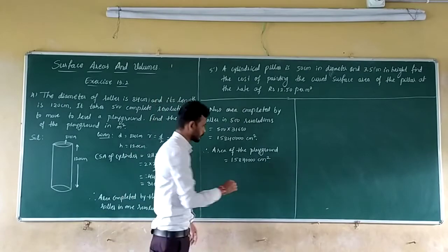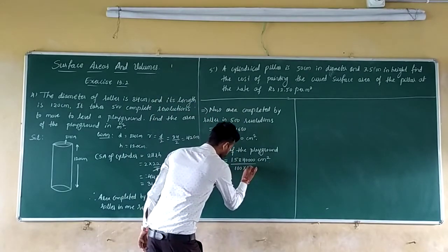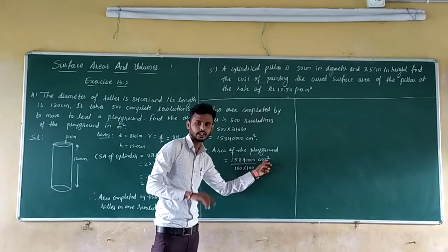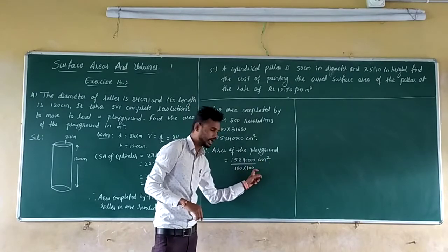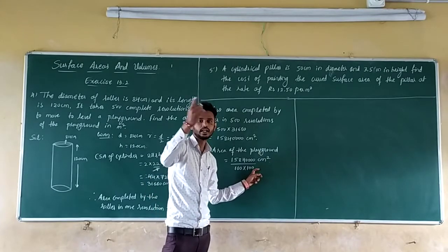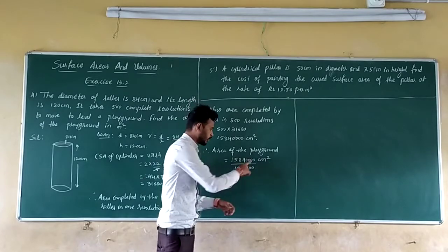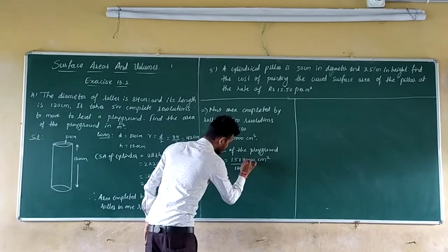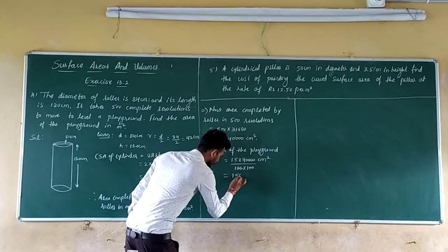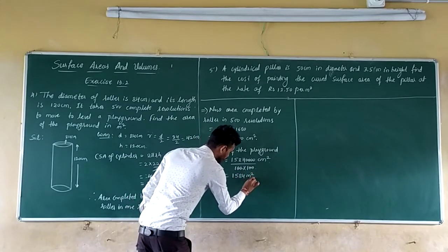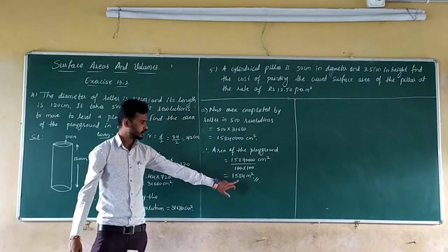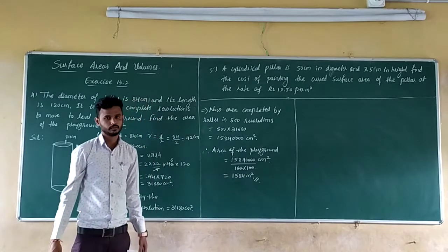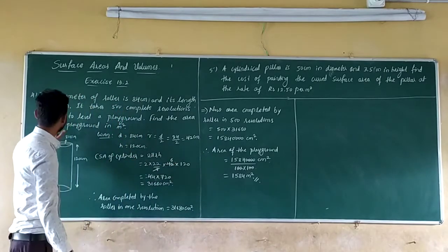To convert cm² to m², divide by 100 × 100. For cubic meter it would be divided by 100 three times. So here, cancel the zeros: 1,58,40,000 divided by 10,000 gives 1,584 m². The area of the playground is 1,584 m². This is the solution of the 4th question.